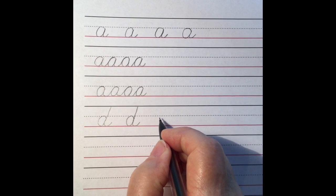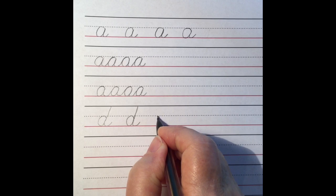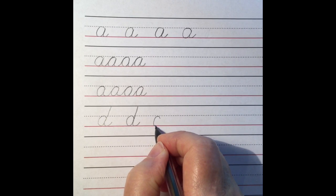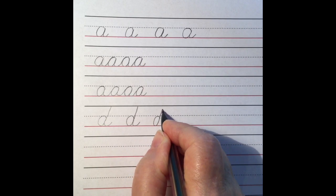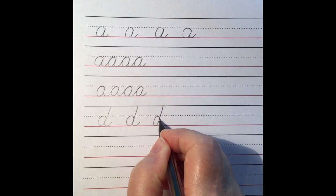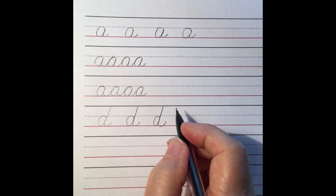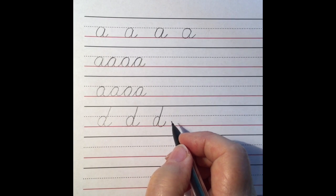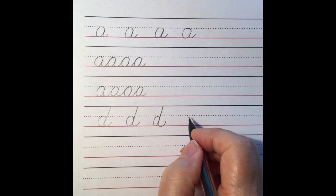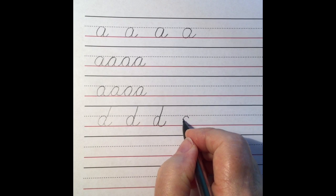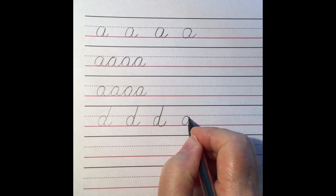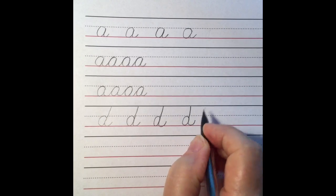So we start just below the midline, make a down curve, touch the baseline, all the way up and touch the headline. Make sure we close the top of the circle when we're making our stem and we finish it up. So it goes down curve, under curve, slant, under curve.